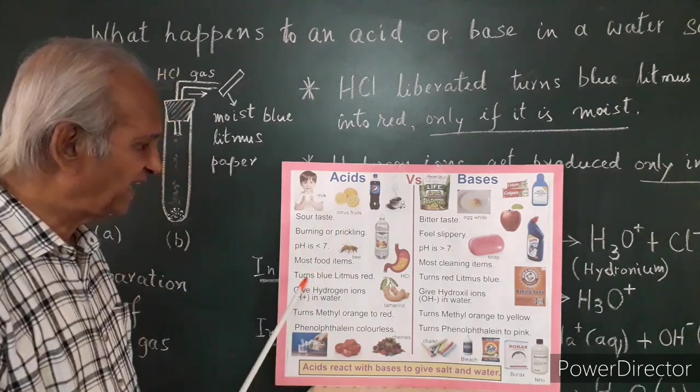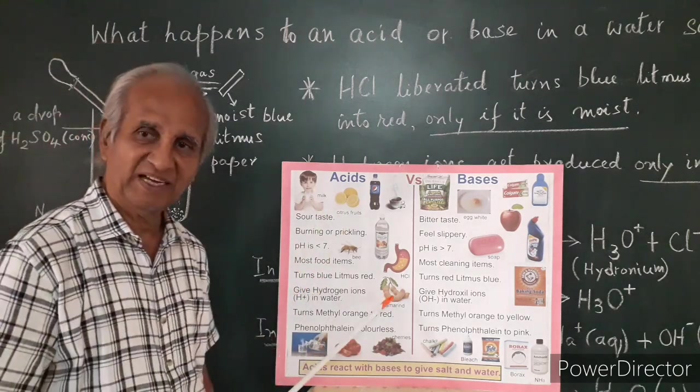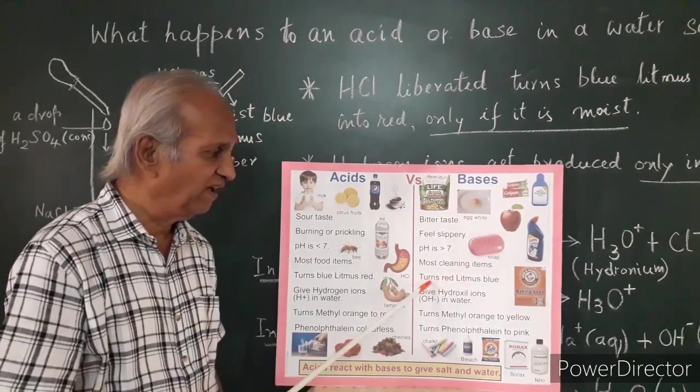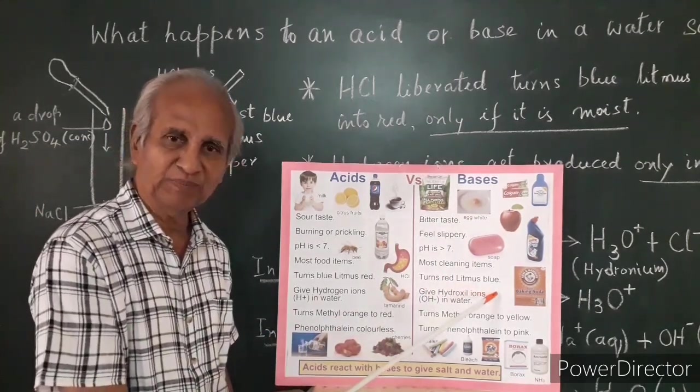Acids turn blue litmus into red whereas bases turn red litmus into blue.